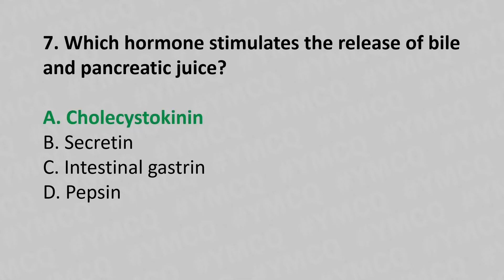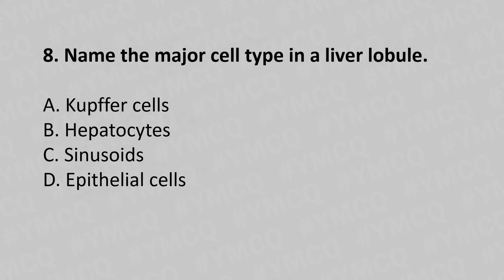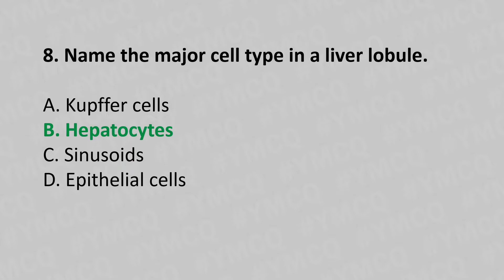Now let's move to question number 8. Name the major cell type in the liver lobule. Option A: Kupffer cells. Option B: Hepatocytes. Option C: Sinusoids. Option D: Epithelial cells. And the answer is Option B: Hepatocytes.